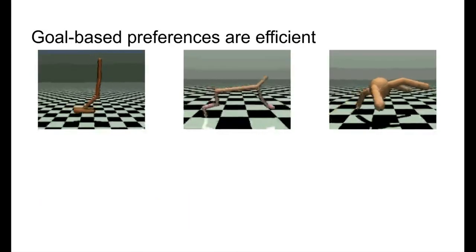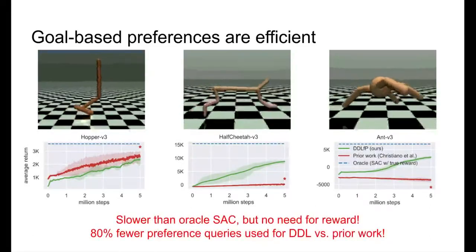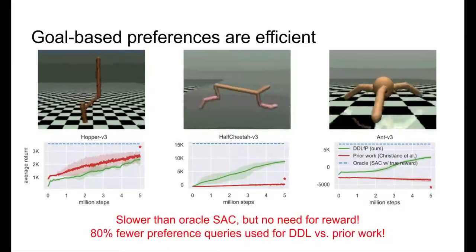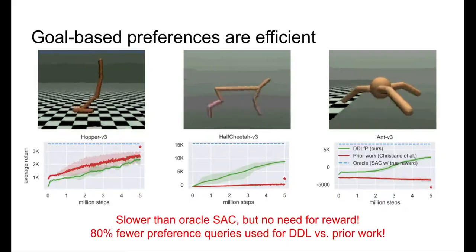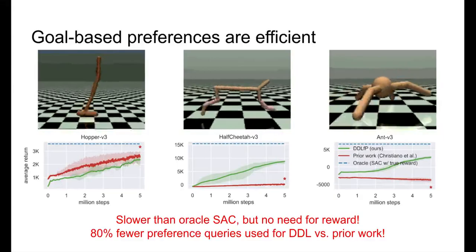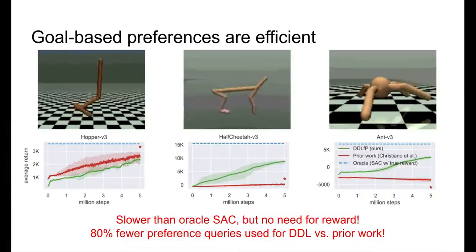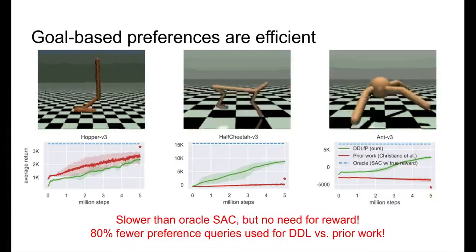The goal preferences are also efficient. DDL learns the standard gym locomotion tasks with less than 20% human queries compared to prior work. Simply picking goals to reach here and there requires much less supervision than what is needed to learn a full reward function for every state action pair. With DDL, the human specifies what the agent should reach, and the agent itself figures out the dynamics of how to reach there quickly.